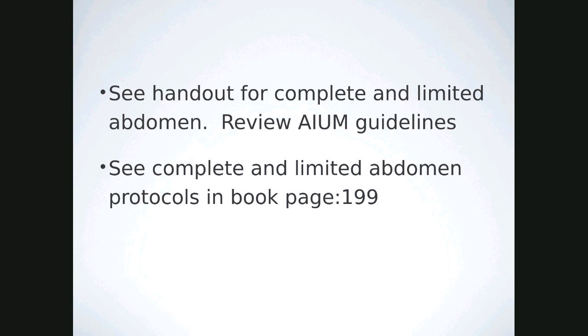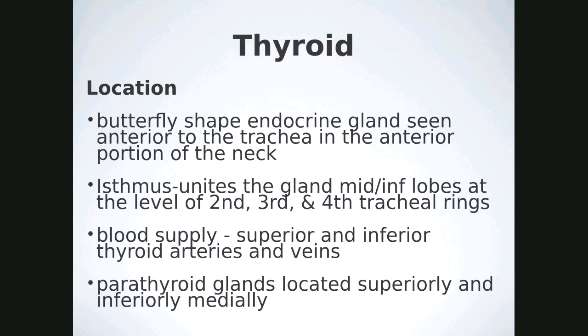Refer to the guidelines and the book — page 199 in some editions, though it may differ in newer editions. The thyroid is a butterfly-shaped endocrine gland lying anterior to the trachea in the anterior portion of the neck. The isthmus is the piece that connects the right and left lobe at the level of the second, third, and fourth tracheal rings. Blood supply is primarily through the superior and inferior thyroid arteries and veins.